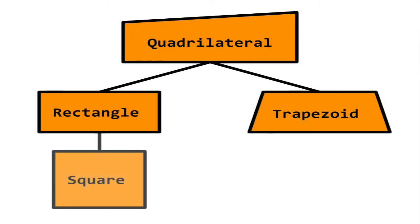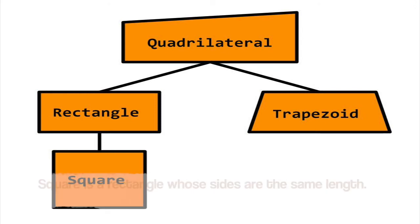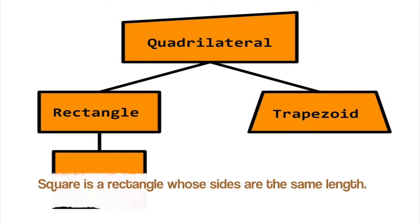For fun, let's create a class called Square. Square inherits all the attributes of Rectangle and gains the requirement of having side lengths all be the same length.